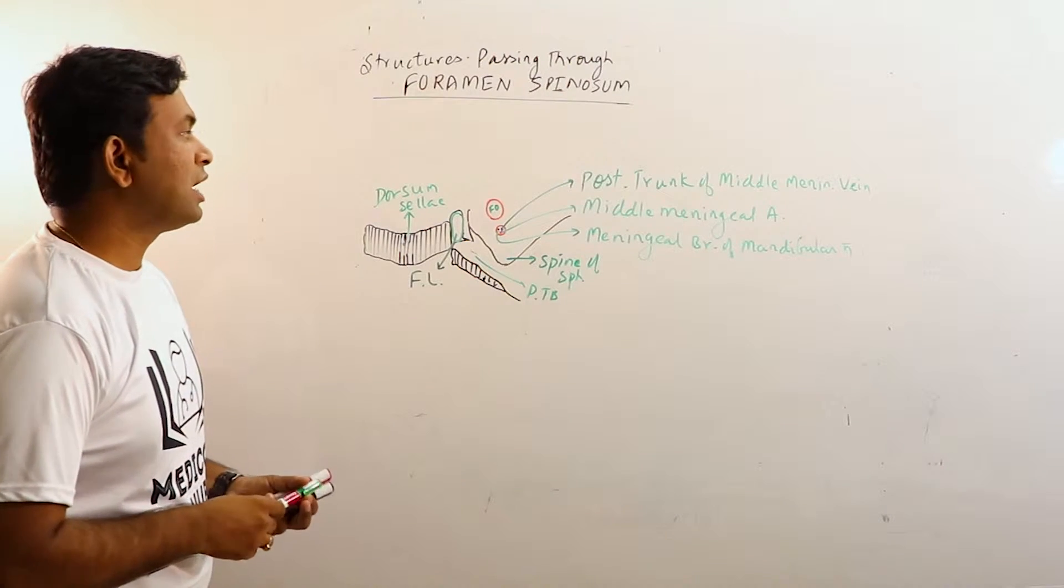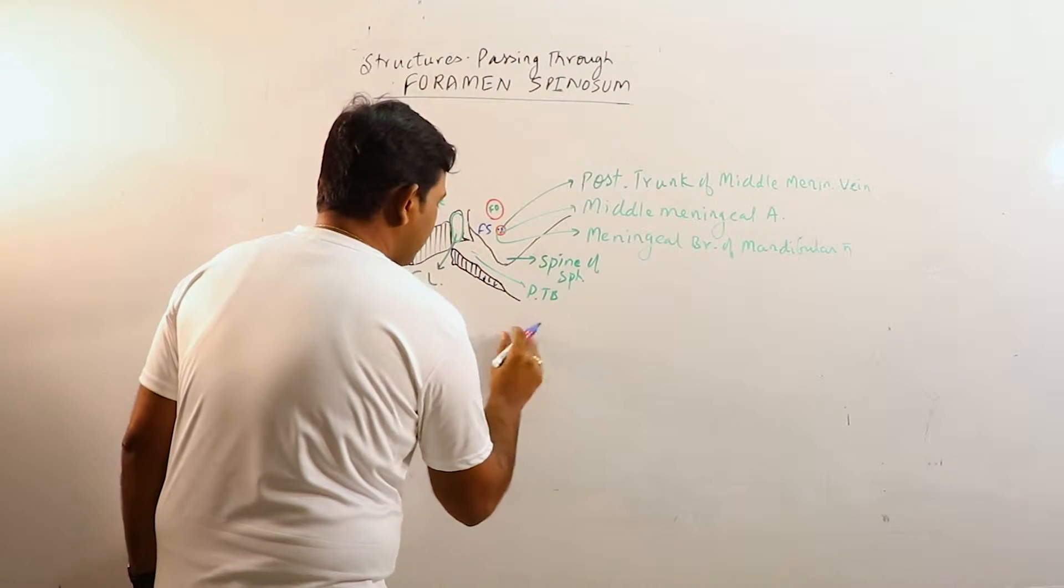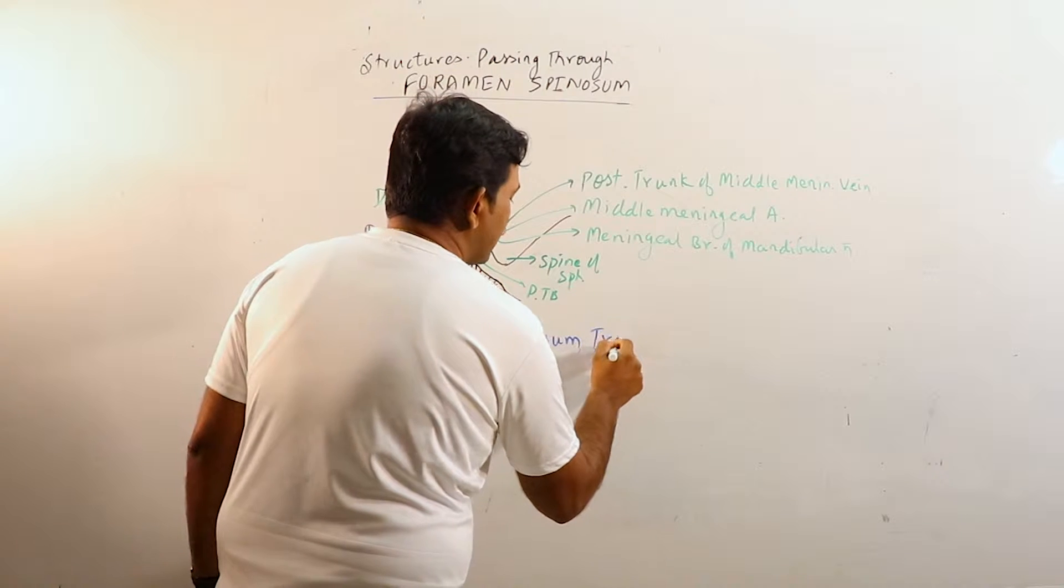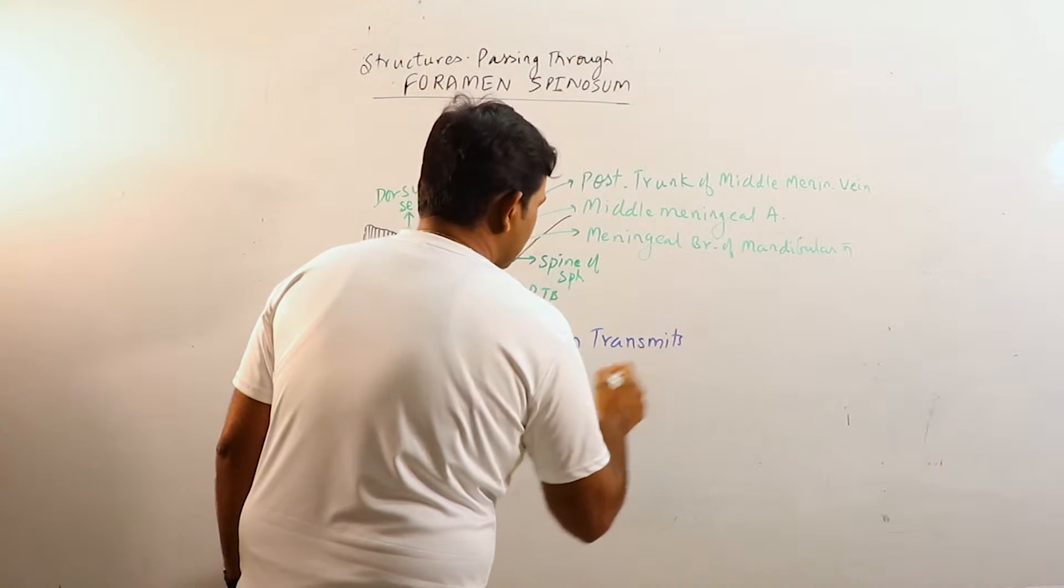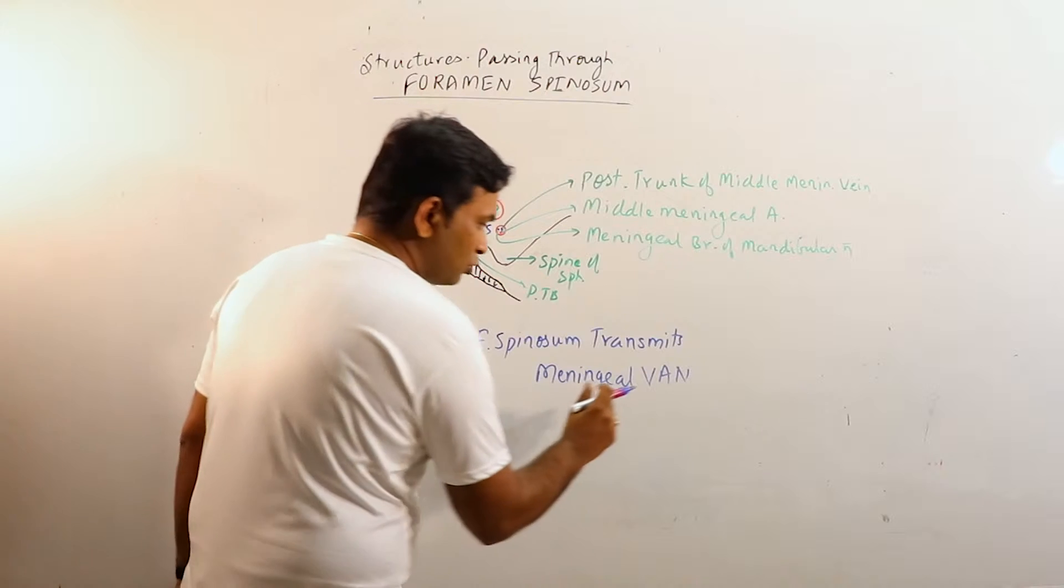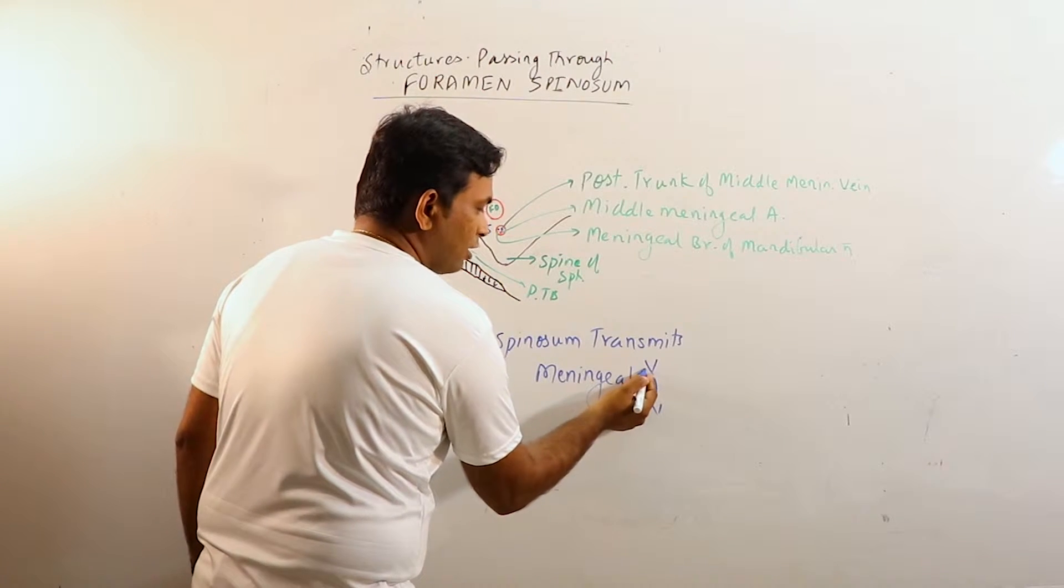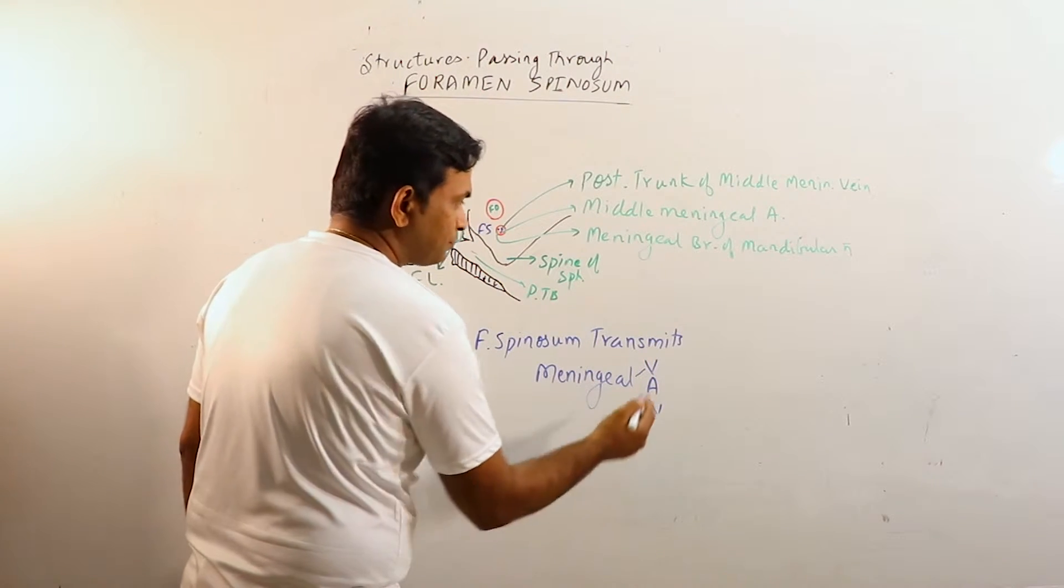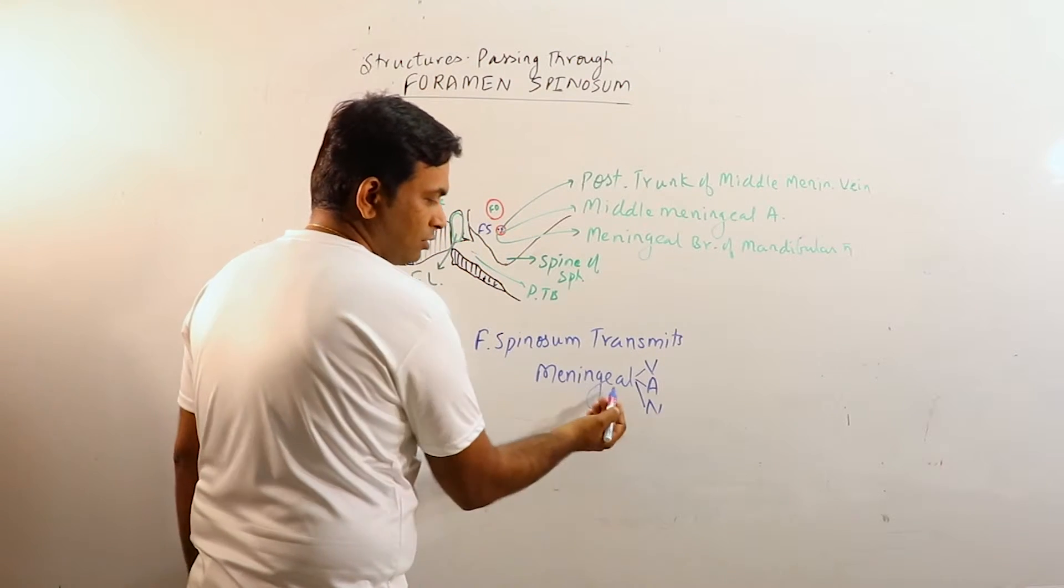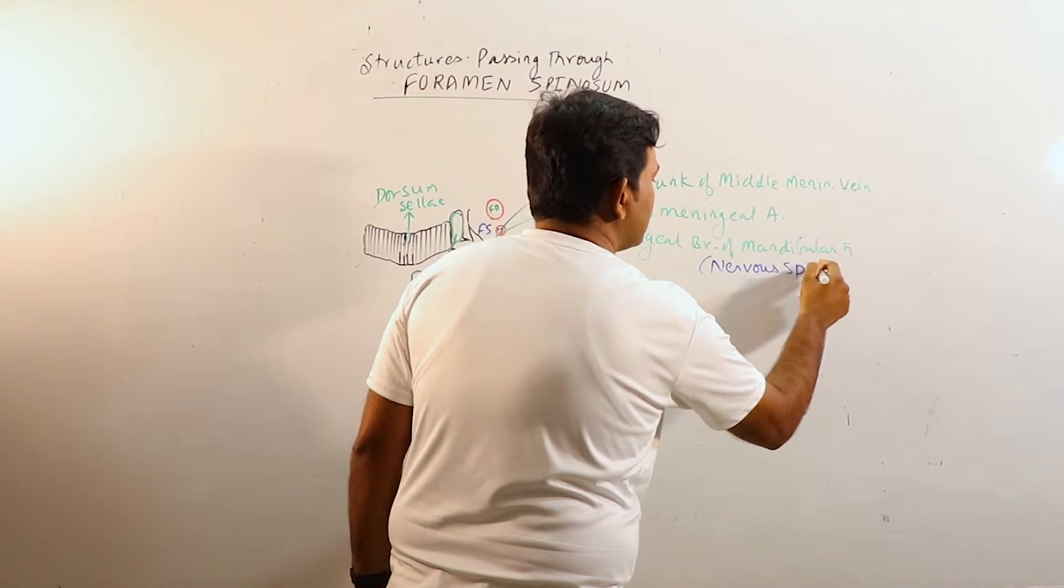So these three structures pass through the foramen spinosum. We can learn it by foramen spinosum mnemonic: meningeal vein. That is posterior trunk of middle meningeal vein, middle meningeal artery, and the meningeal branch of mandibular nerve. It is also known as nervus spinosus.